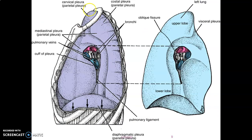This shows your thoracic inlet formed by the manubrium, the first rib, and the first thoracic vertebra. This also shows the anatomy of the lung — the structures at the hilum — and the upper lobe.